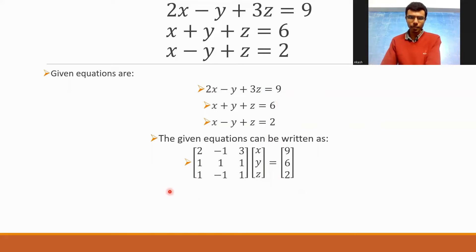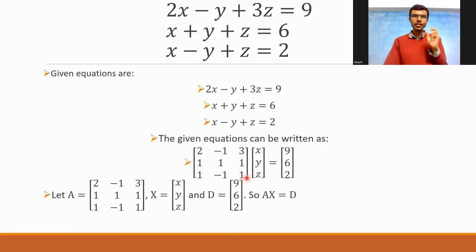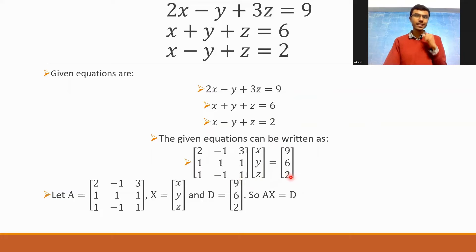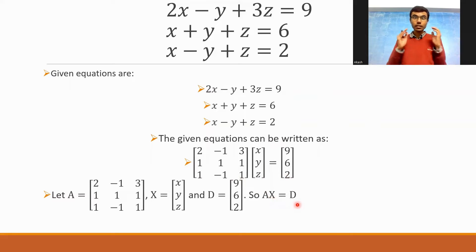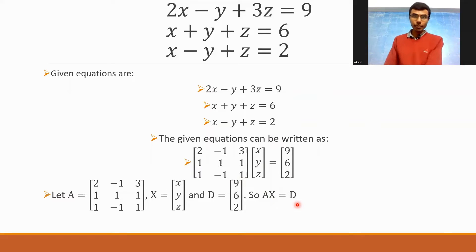Now I'm going to take this first matrix as A, the second matrix as X, and the matrix on the RHS as D. So basically I'll get AX equal to D. This is my equation, which I need to solve with the help of Cramer's Rule.